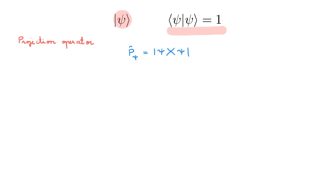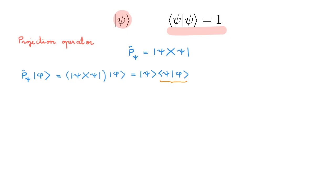Now that we have defined the projection operator, we want to understand what it does. To see it, we consider the action of the operator on an arbitrary ket |phi⟩. We first write out the projection operator explicitly as an outer product. We then rearrange this expression, and we set the bracket here between |Psi⟩ and |Phi⟩ as the scalar C. We can move a scalar to the front, and we obtain C|Psi⟩, where C is the bracket between |Psi⟩ and |Phi⟩.